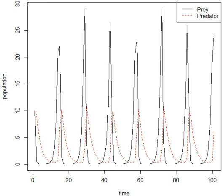If either x or y is zero, then there can be no predation. With these two terms the equation can be interpreted as follows: the rate of change of the prey's population is given by its own growth rate minus the rate at which it is preyed upon.